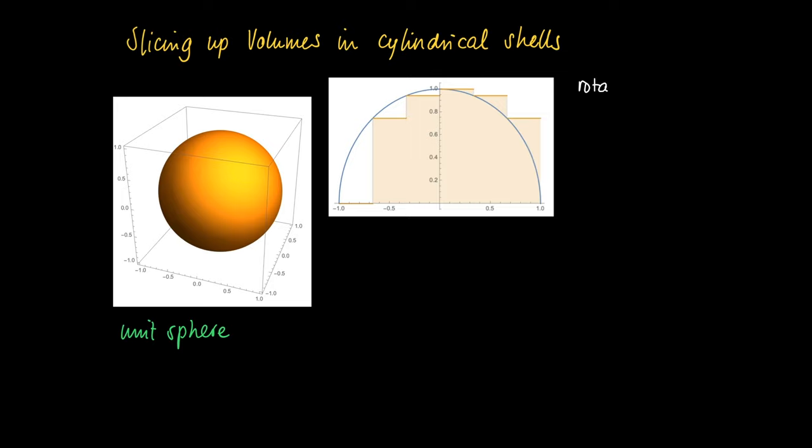But it can also be achieved as a revolution body by rotating a function f(x) equals the square root of 1 minus x squared around the x-axis.